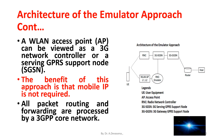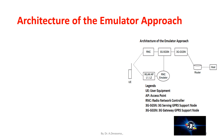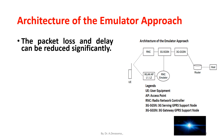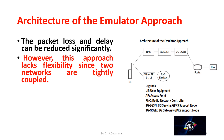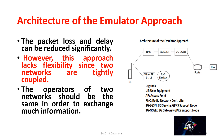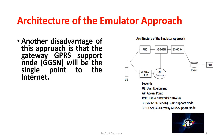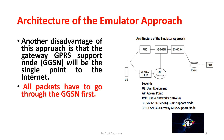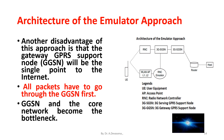All packet routing and forwarding are processed by the 3G core network, and packet loss and delay can be reduced significantly by this emulator approach. However, this approach lacks flexibility since the two networks are tightly coupled. The operators of the two networks should be the same in order to exchange information. Another disadvantage is that the gateway GPRS support node, GGSN, will be the single point to the internet. All packets have to go through the GGSN first, making the GGSN and the core network the bottleneck.